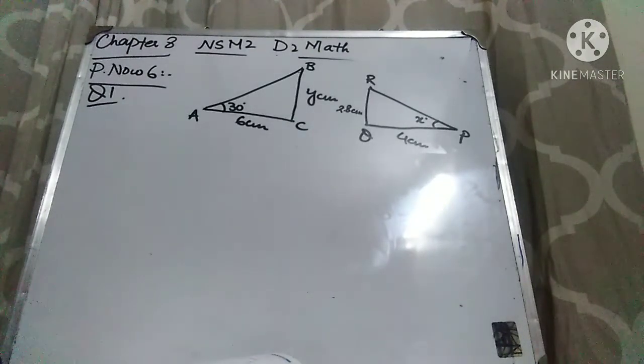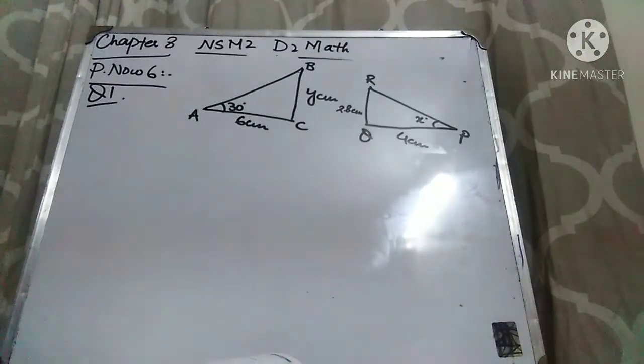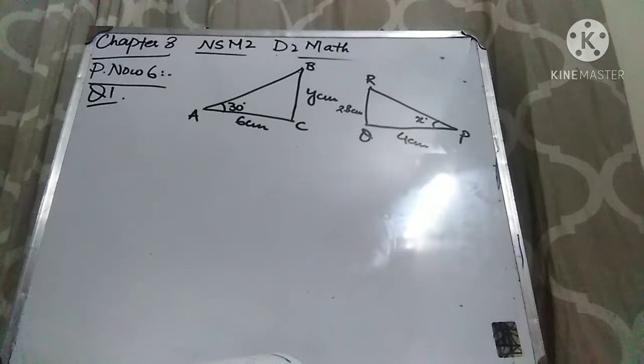As you can see the figure, I am going to explain Practice Now. Question number 1 is: given that triangle ABC is similar to triangle PQR, find the values of the unknowns in the triangles.